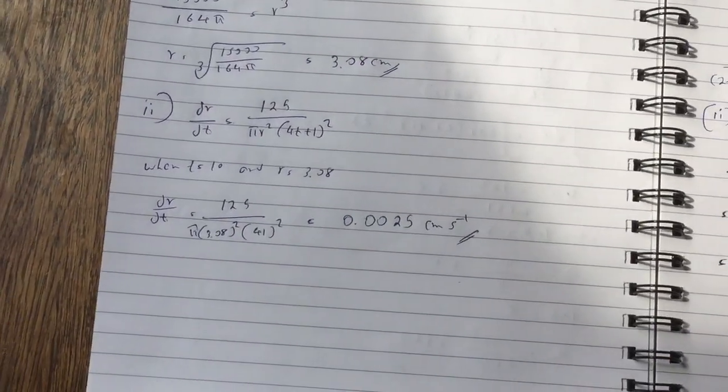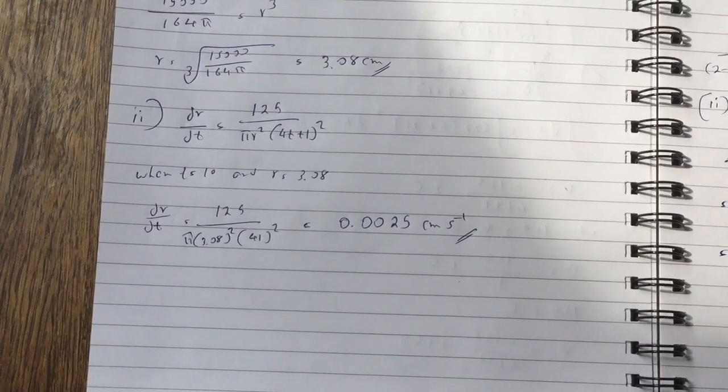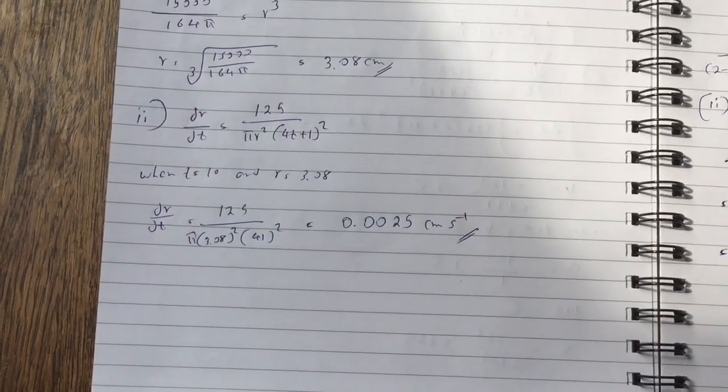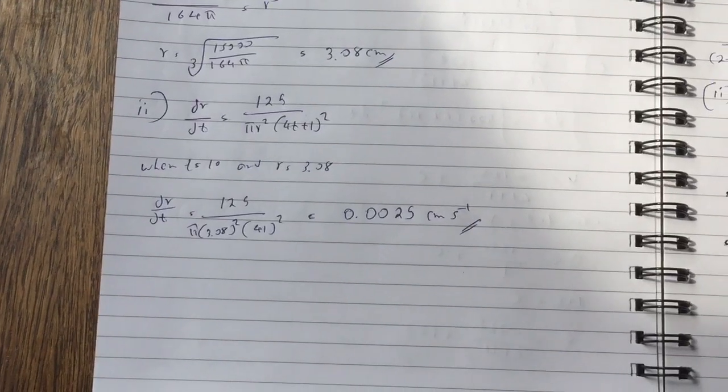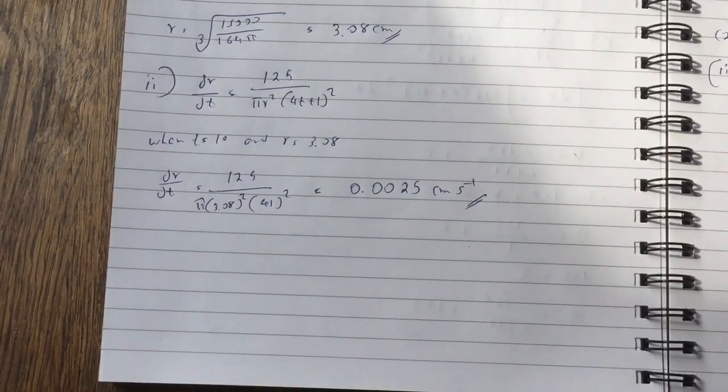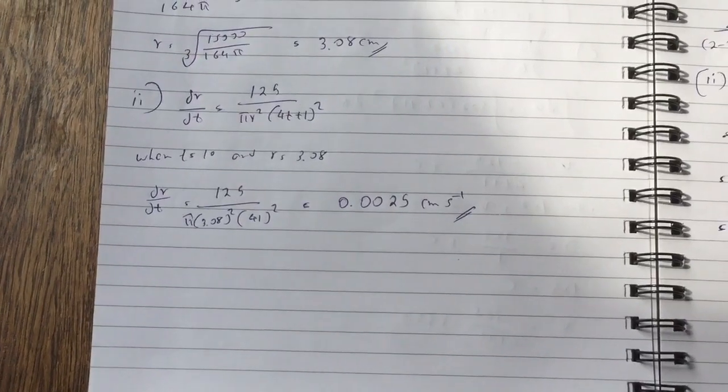We need to find dr dt. We know dr dt is 125 over pi r squared 4t plus 1 squared from before. So when t is equal to 10 and r is equal to 3.08, dr dt equals to 0.0025 centimetres per second.